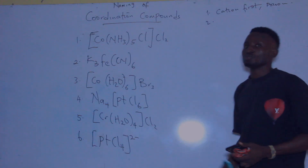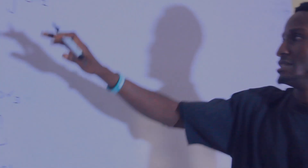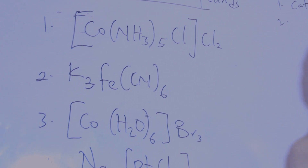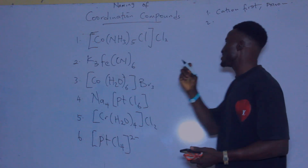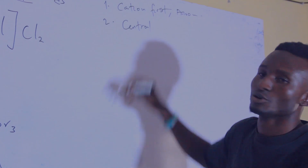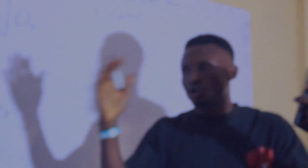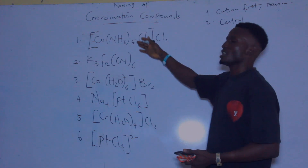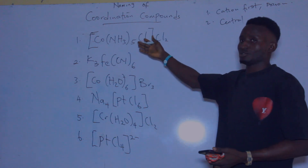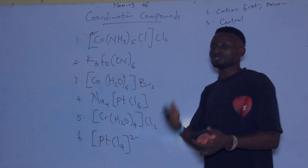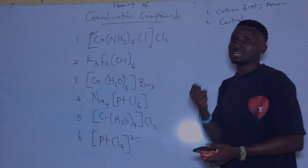Rule number two: in all these complex compounds, there will be a central atom on which other ligands will be attached. Ligands are called substituents — they attach to the main atom in the compound.